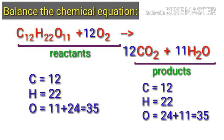The equation is now balanced. There are 12 carbon atoms, 22 hydrogen atoms and 35 oxygen atoms on both sides.